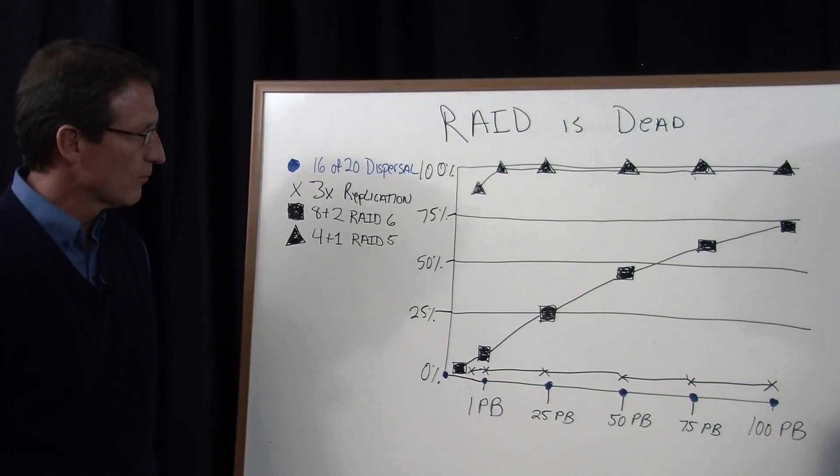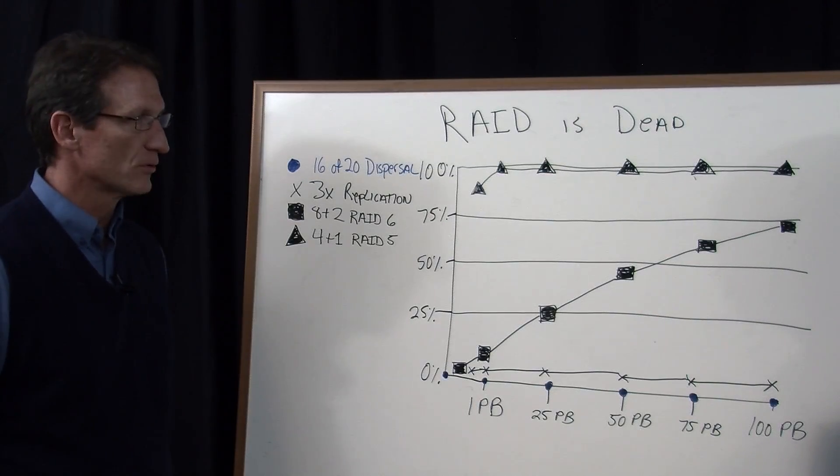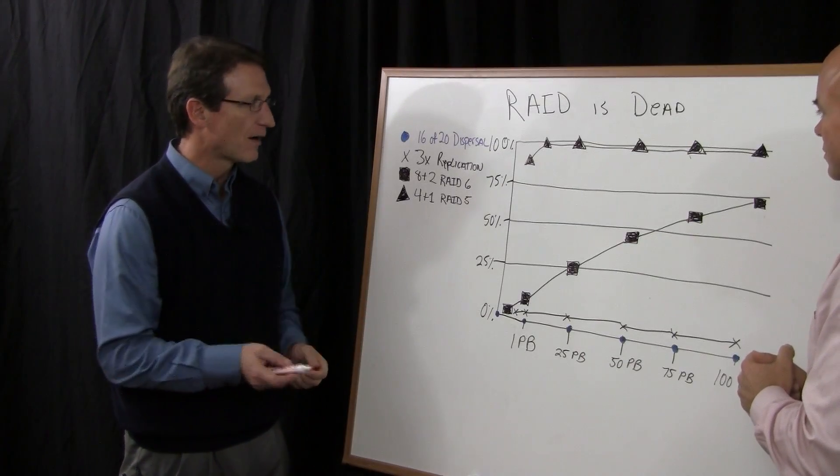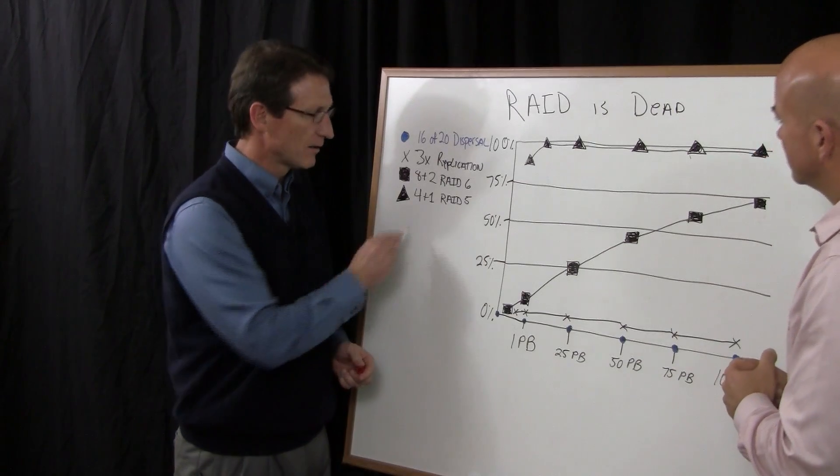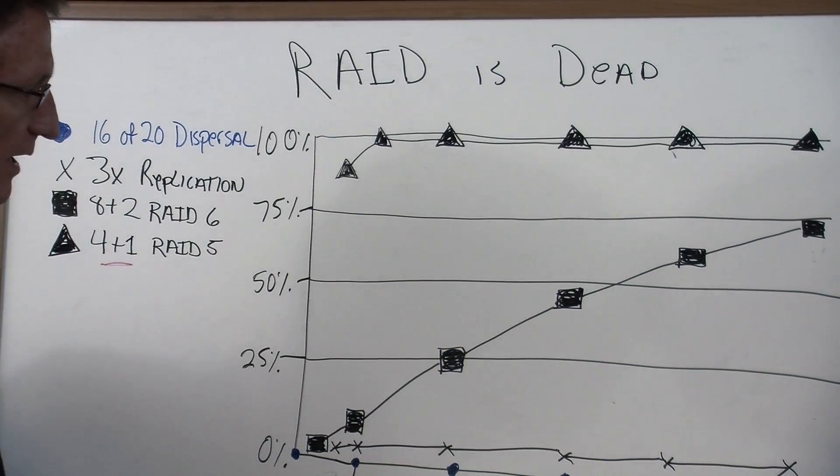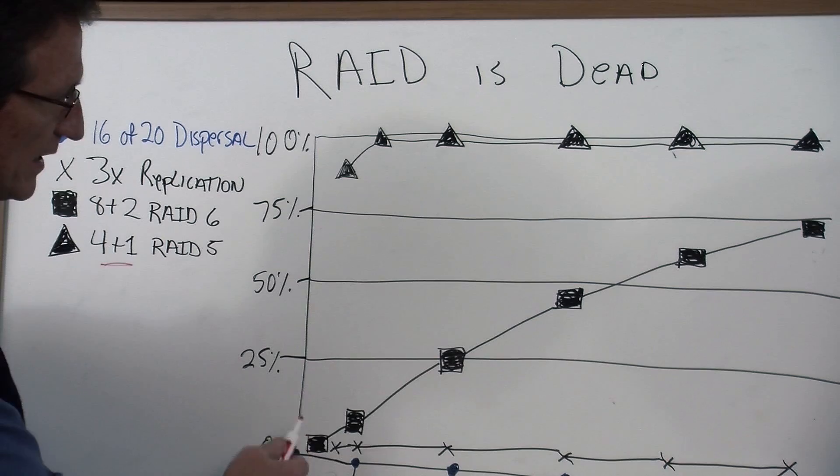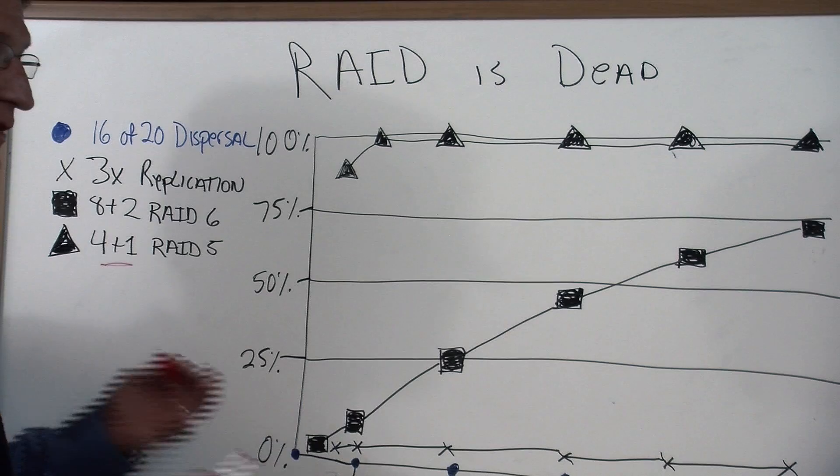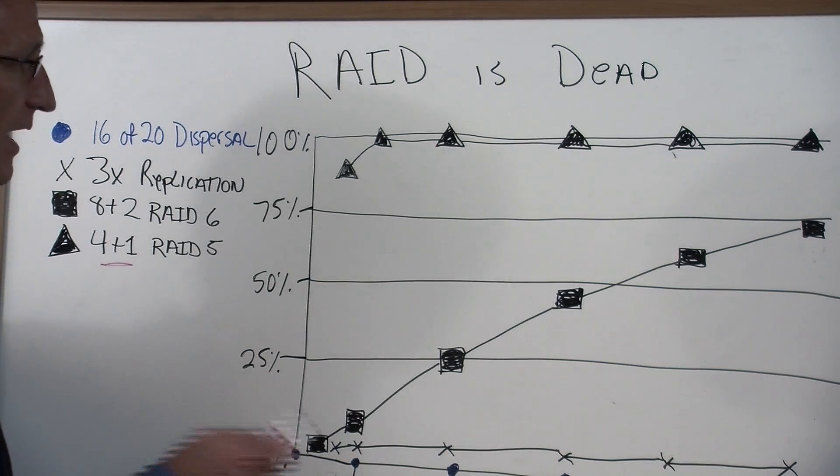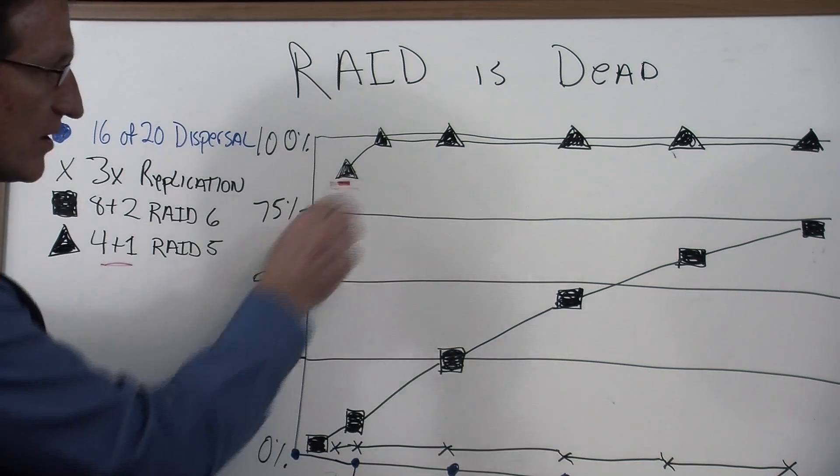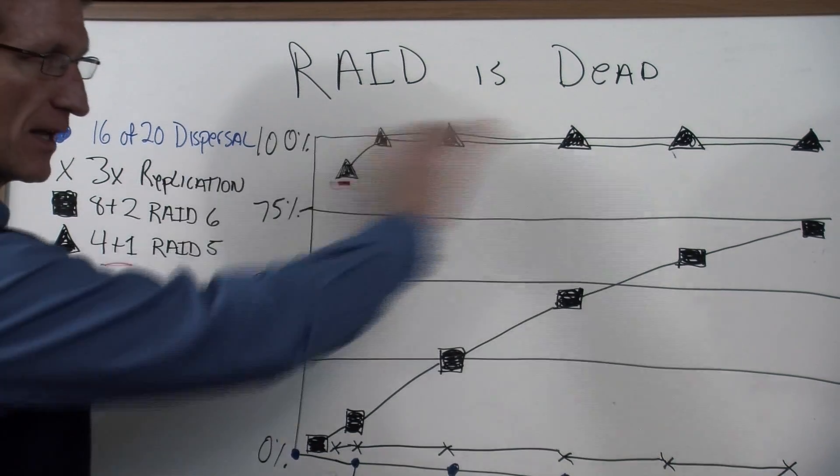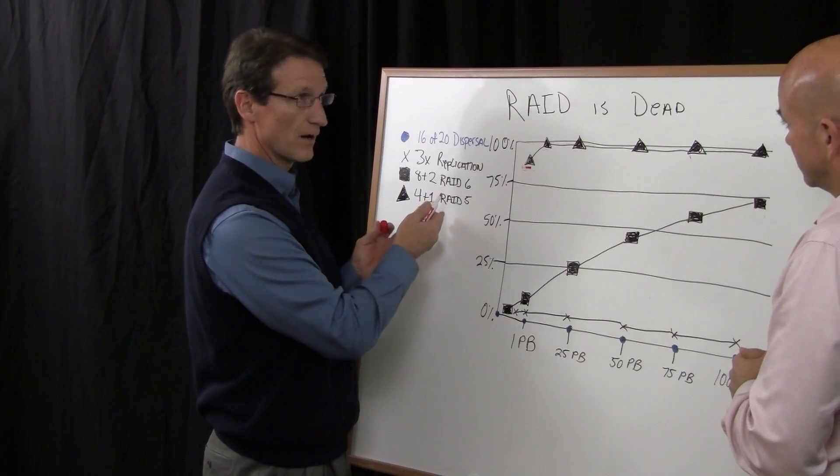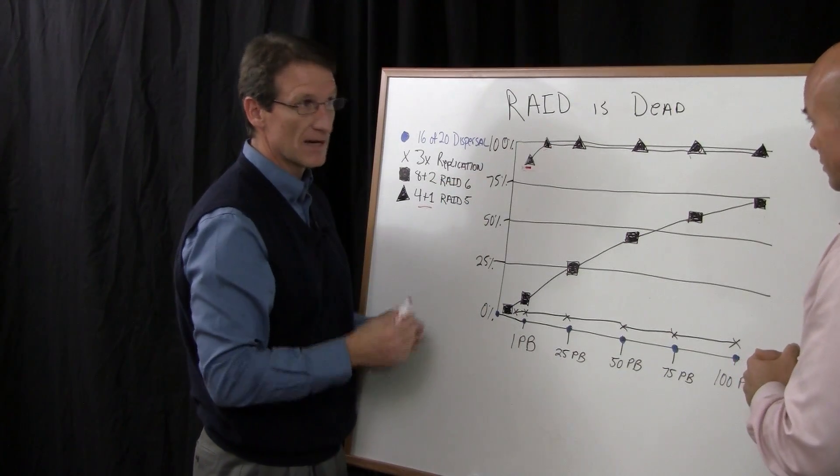So on the whiteboard here we have several examples of different RAID types. We'll start at the top with the one that's most likely to fail at scale and that is RAID 5, and the example we've drawn here is a 4 plus 1 RAID 5 configuration. If you have somewhere between half a petabyte and a petabyte of information, the likelihood that you're going to have data corruption or failure is over 80%. And when you get to a petabyte, it jumps up to 100%.